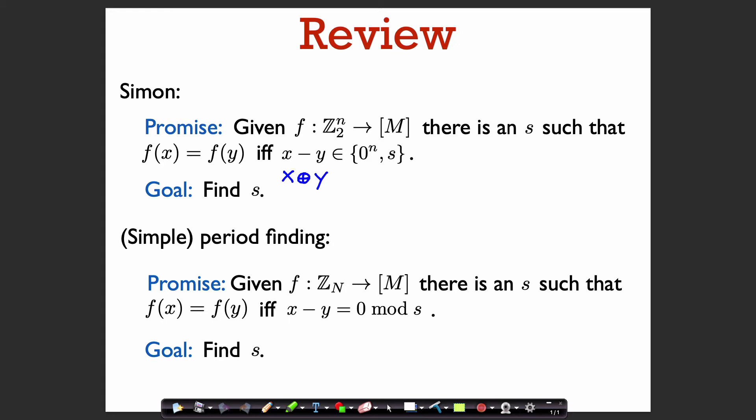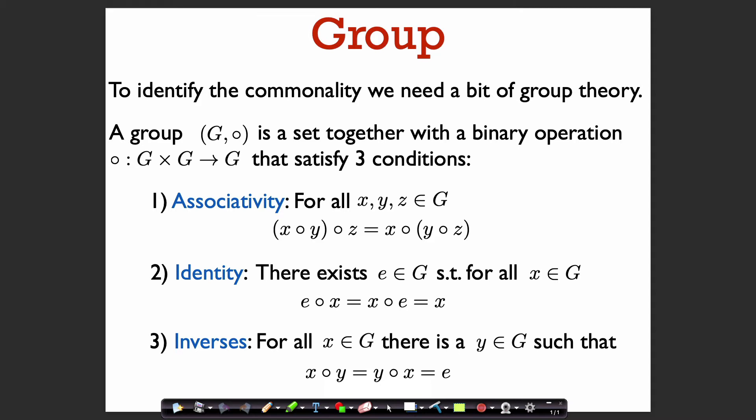In the simple period-finding problem, we have a function from the integers modulo n to some range, and the promise is that there's an s such that f(x) = f(y) if and only if x minus y is equal to 0 modulo s. To identify the commonality in these two problems, we need to use some group theory.